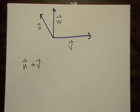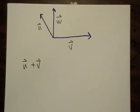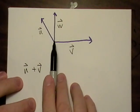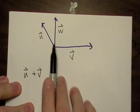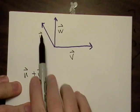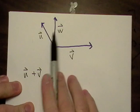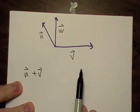We're going to expand on our vectors a little bit. I've drawn here a set of three vectors, and they all have magnitudes and directions.